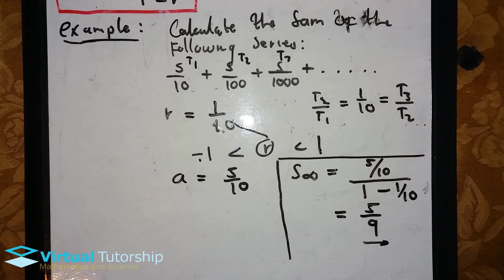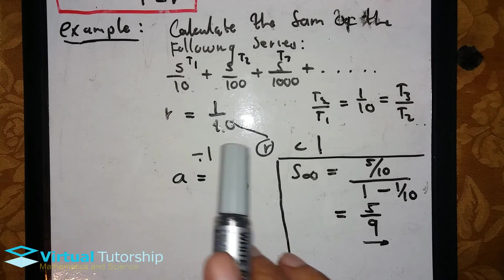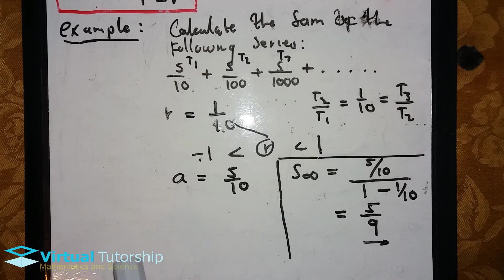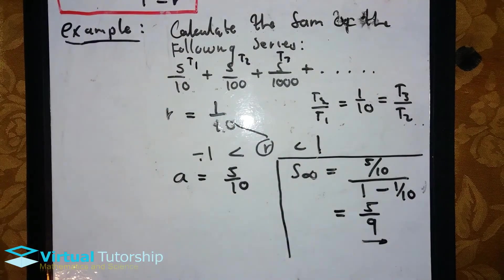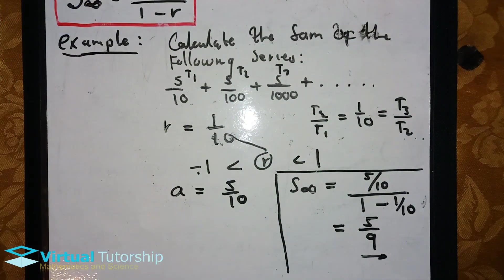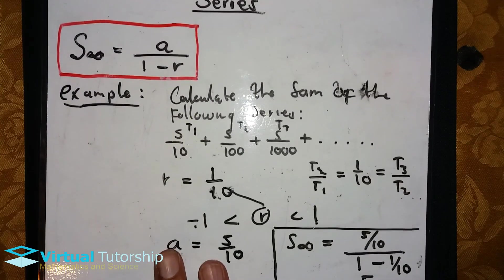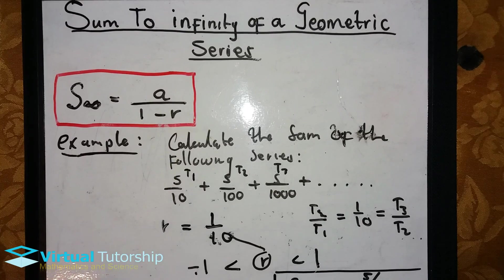So in other words, as the series goes to infinity, the sum approaches 5 over 9. So to summarize: for sum to infinity of a geometric series, first calculate r, verify it's between minus 1 and 1, then apply the formula. Thanks for watching — if you enjoyed this video, leave a thumbs up and come back for more.